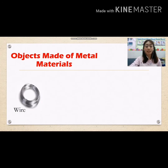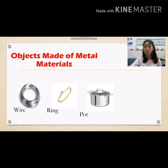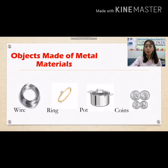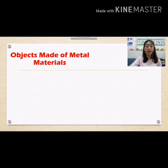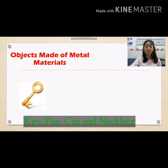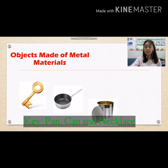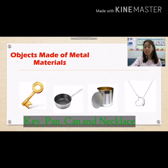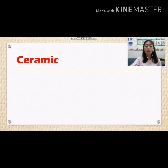Objects made of metal materials include wire, ring, pot, and coins. More examples are key, pan, can, and necklace.